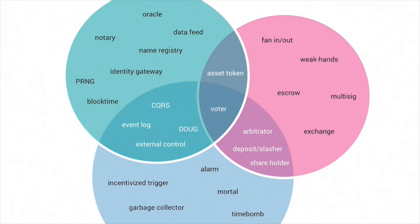Let's take a look at these three circles. We thought of a couple of patterns and tried to categorize them into three categories. The green circle contains data-related patterns — things like name registry, event logs, handling data and naming information, identity, track record, and auditing.